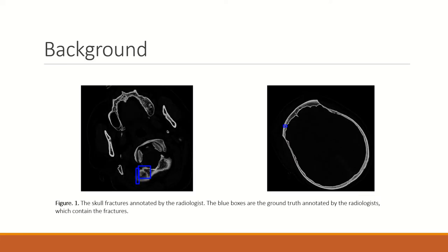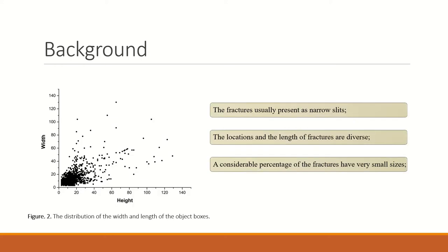Skull fractures following head trauma may bring several complications and cause epidural hematomas. Therefore, it is of great significance to locate the fractures in time. However, it is not an easy task. As shown in the two CT slices, the fractures usually present as narrow slits, and the locations and lengths of fractures are diverse. The statistics of annotated boxes in the collected data show that a considerable percentage of the fractures have very small sizes. All this makes previous methods unable to achieve higher accuracy.